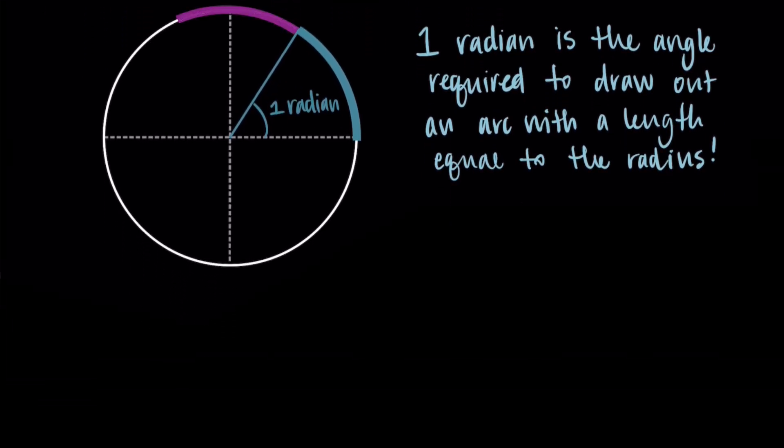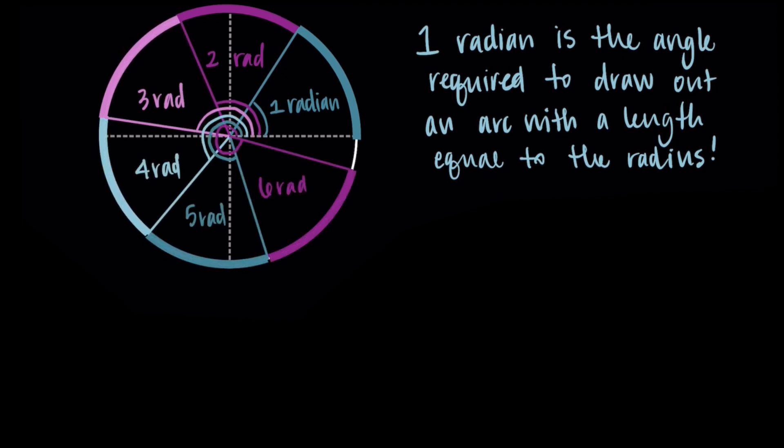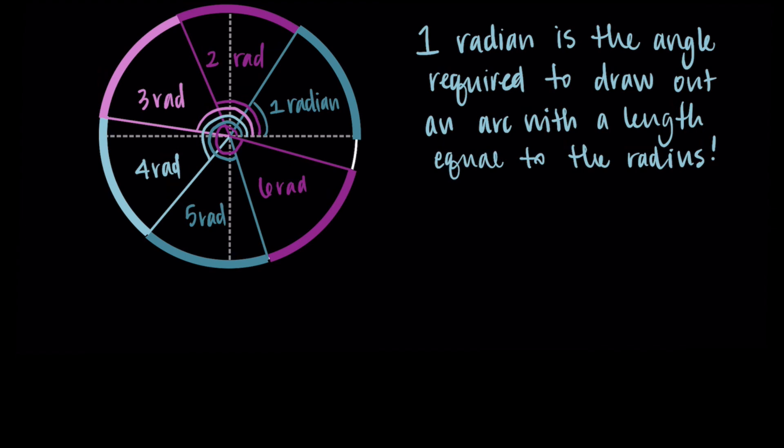So I'm going to start with one radian and then repeat it. Now I have two radians. I'm going to keep doing this. So I have three radians, four radians, five radians, and six radians. So at this point, I'm at six radians, and I'm almost filling in that whole circle. I've almost gone a full revolution.